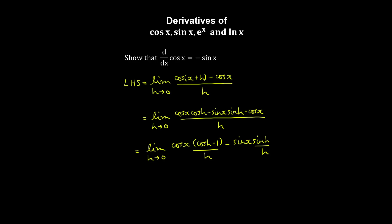Then we can split these up into two and evaluate them individually using the limit rules. Recall that this limit here evaluates to zero as we've proven previously, and this limit here evaluates to one. So therefore the derivative of cosine x is minus sine x.